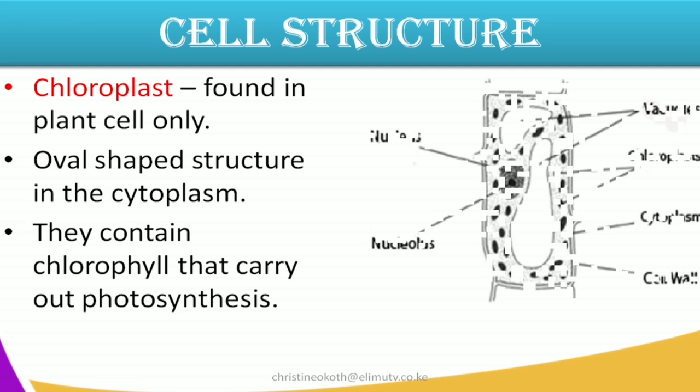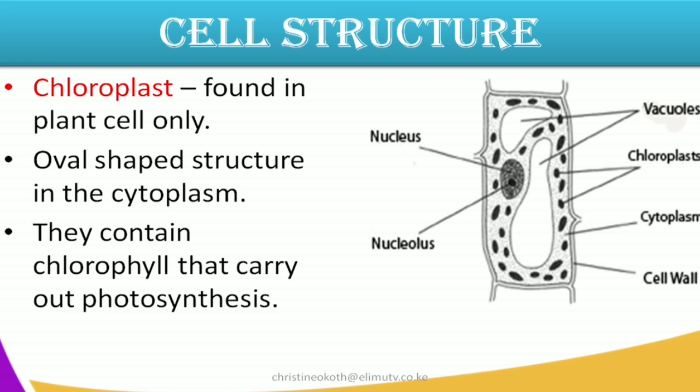The next structure is the chloroplast, which is just found in the plant cell only. It is an oval-shaped structure found in the cytoplasm. These chloroplasts contain chlorophyll that carries out photosynthesis — the making of food using light by the plants. So the plants make their own food using the light, and this structure called chlorophyll is also helpful in the process of making food by the plants.